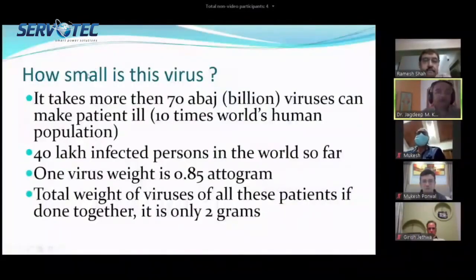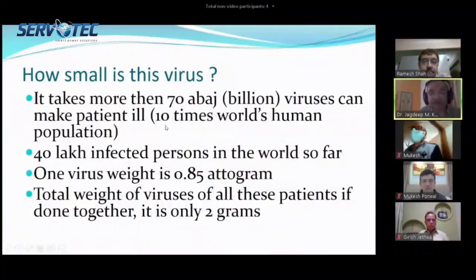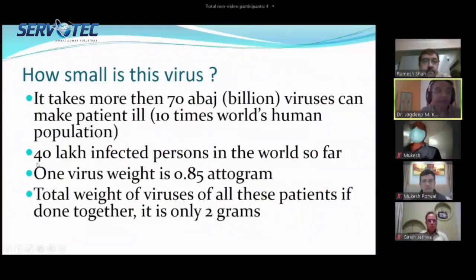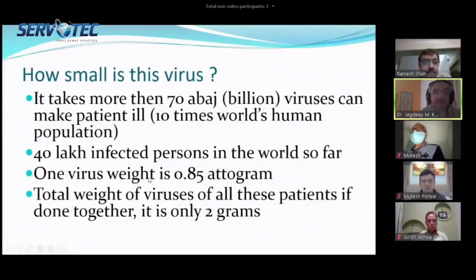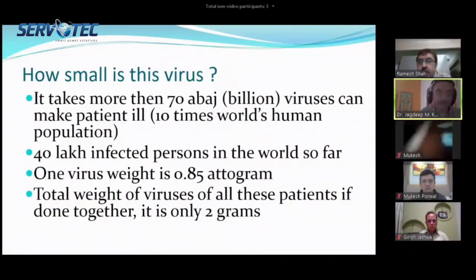It takes more than 70 abuj viruses to make one patient ill — that is 10 times the world's human population. There are about 40 lakh infected persons in the world so far, and one virus weighs 0.85 attogram. The total weight of all the viruses from all 40 lakh patients combined is only 2 grams.